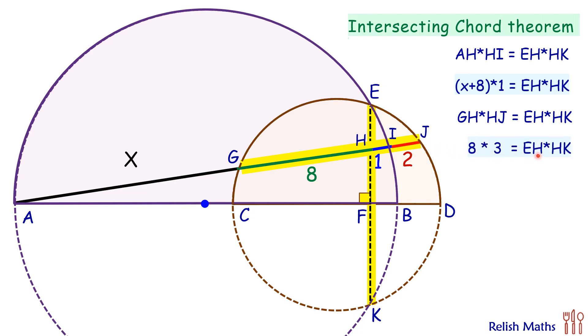Now if we compare both, RHS is equal, so LHS has to be equal. We'll get X plus 8 times 1 equals 8 times 3. Solving it, we'll get X as 16 centimeter, and that's our answer.